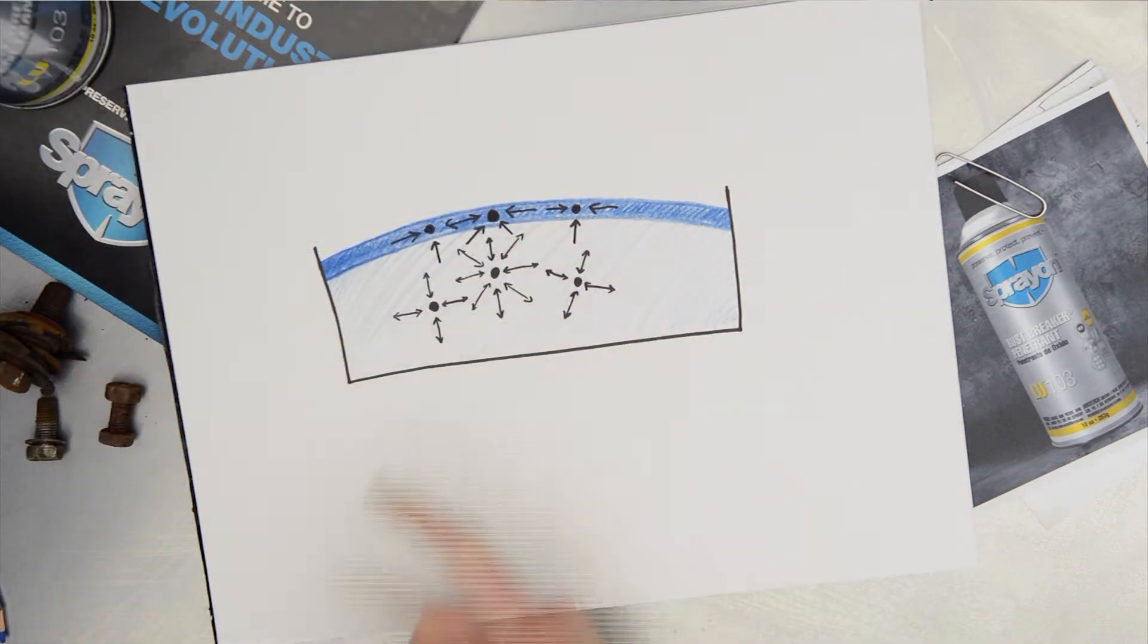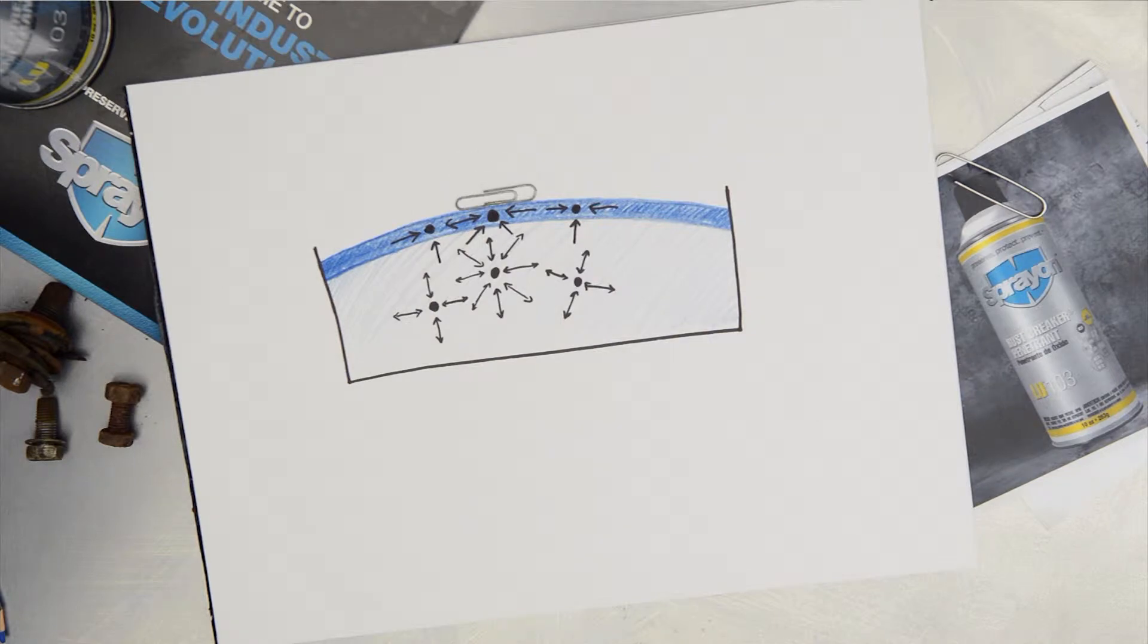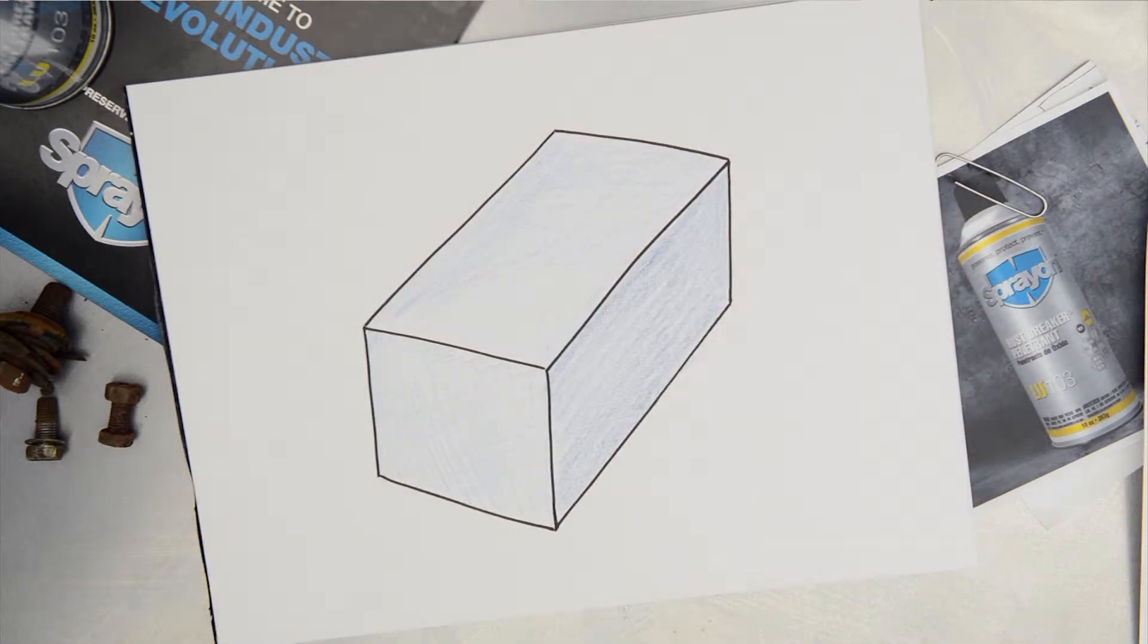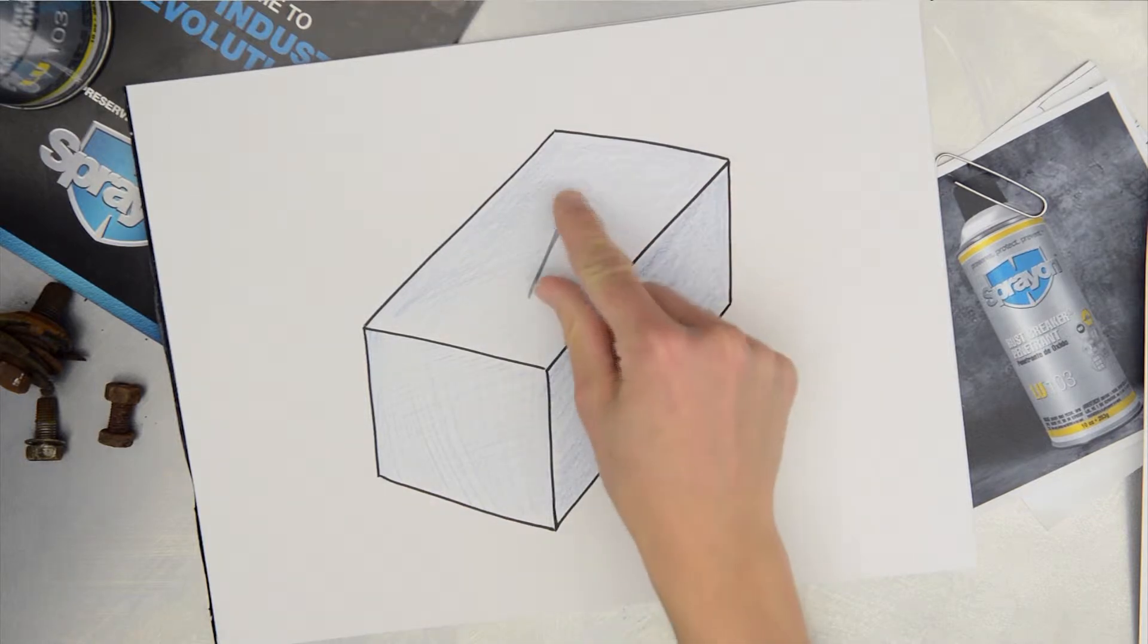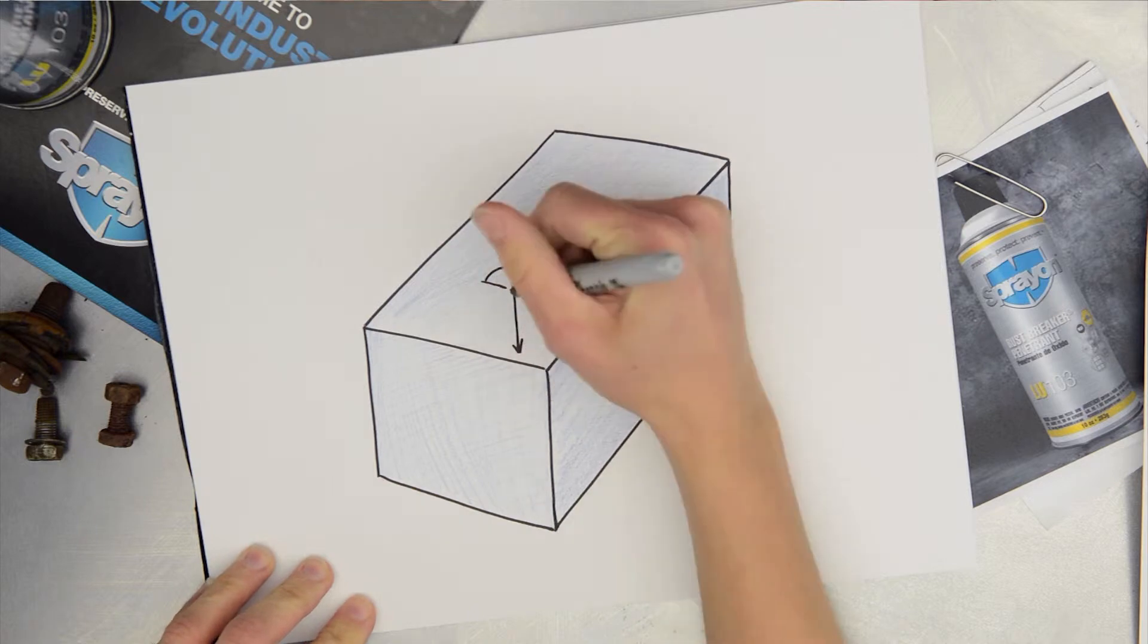This surface tension is what allows some objects to rest on top of water, even though they are more dense. For example, if you were to place an iron needle flat on the surface of water, it would remain there. Its weight would be supported by the forces in the stretched surface.